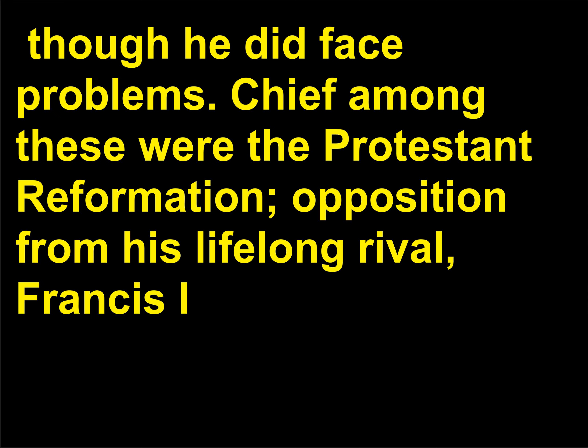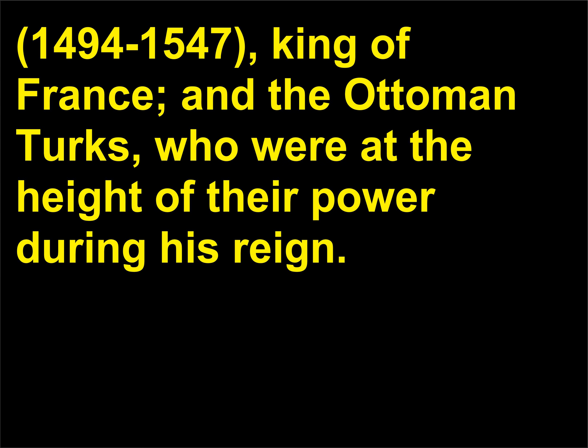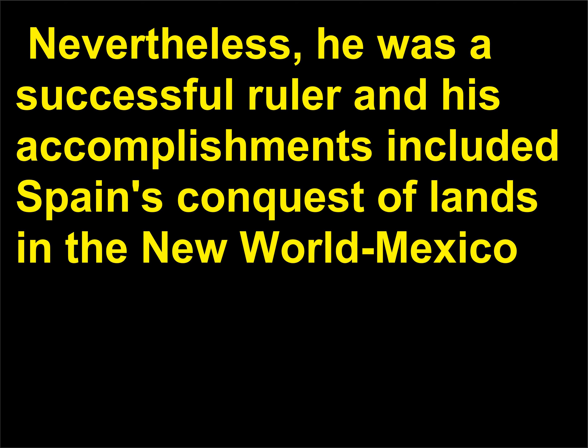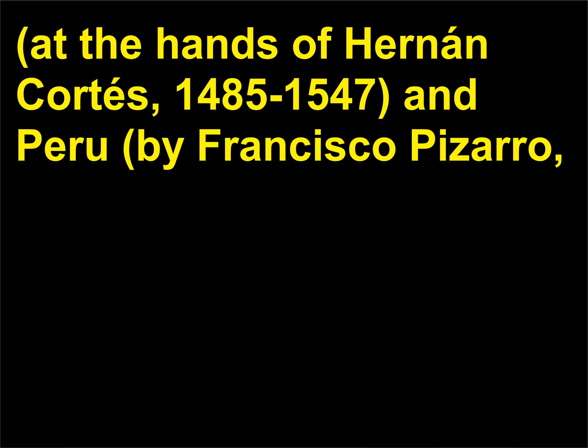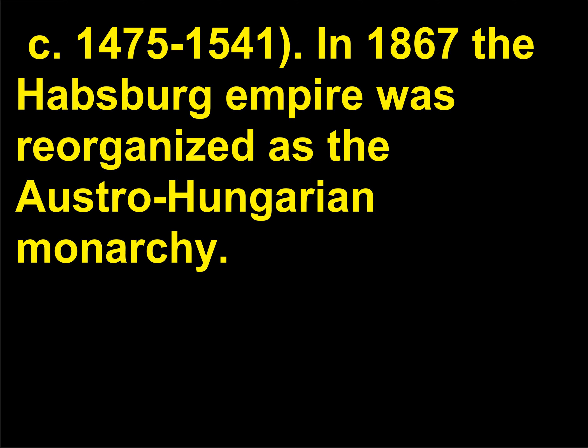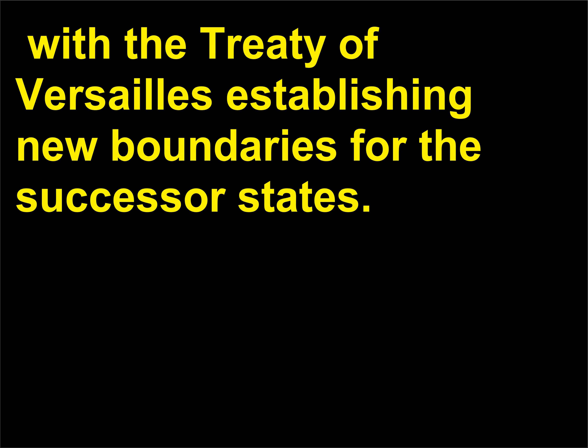Though he did face problems — chief among these were the Protestant Reformation, opposition from his lifelong rival Francis I, 1494–1547, King of France, and the Ottoman Turks, who were at the height of their power during his reign. Nevertheless, he was a successful ruler and his accomplishments included Spain's conquest of lands in the New World — Mexico at the hands of Hernán Cortés, 1485–1547, and Peru by Francisco Pizarro, c. 1475–1541. In 1867 the Habsburg Empire was reorganized as the Austro-Hungarian Monarchy. That monarchy was dissolved in 1918 after World War I, with the Treaty of Versailles establishing new boundaries for the successor states.